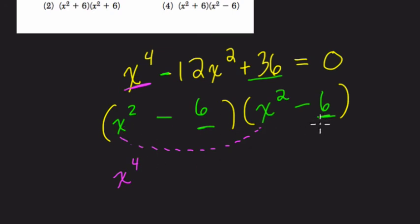Then x squared times negative 6, right? We're distributing that. That is negative 6x squared. Then negative 6 times x squared, that's our next distribution, is negative 6x squared. And then finally negative 6 times negative 6 is positive 36.